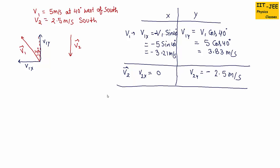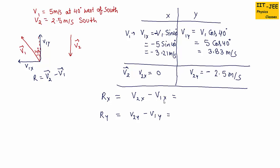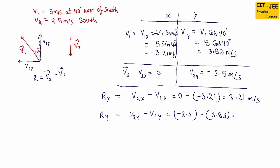Now using these components we find the x and y components of the resultant vector, rx and ry, where r equals v2 minus v1. So rx equals v2x minus v1x equals 0 minus (minus 3.21) equals positive 3.21 m/s. And ry equals v2y minus v1y equals minus 2.5 minus 3.83 equals minus 6.33 m/s.